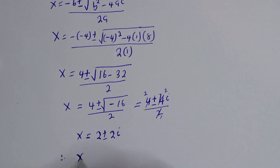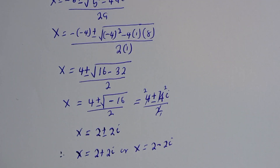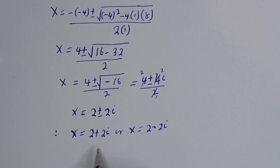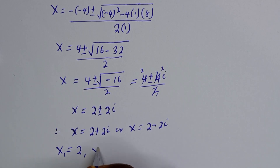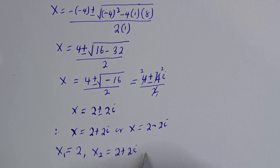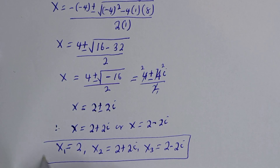Therefore S is equal to 2 plus 2i, or S is equal to 2 minus 2i. These are complex solutions. Our final answers are: S1 is equal to 2, S2 is equal to 2 plus 2i, and S3 is equal to 2 minus 2i.